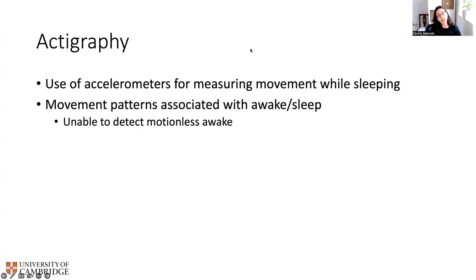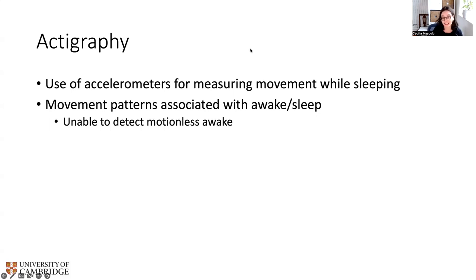One other technique that has been used is related to acceleration. Accelerometers measure movement — movement patterns associated with wake and sleep — so they detect wake and sleep quite well, but are often unable to detect motionless awake, and that's why this can be a problem. It tends to overestimate the amount of time you're sleeping.